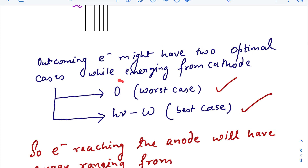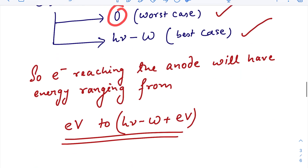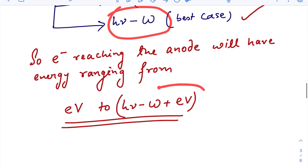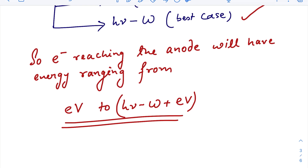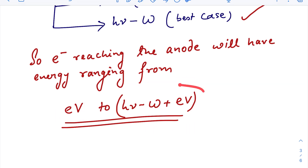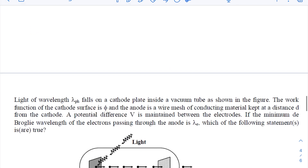While reaching the anode, that same electron gains an energy e times V. So in the worst case scenario, the energy becomes zero plus eV, i.e., eV. In the best case, the energy becomes h·mu minus phi plus eV. So the electrons reaching the anode have a range of kinetic energy from eV up to that maximum value.